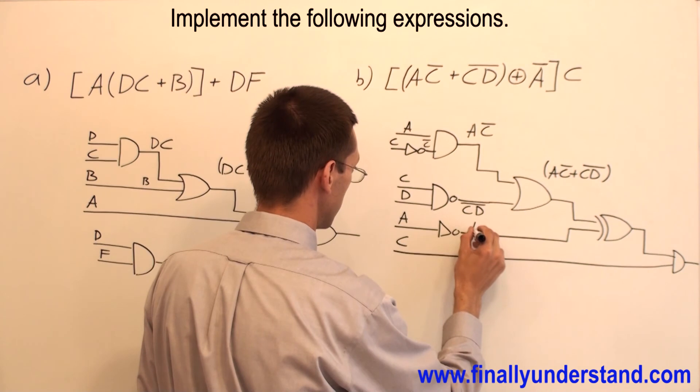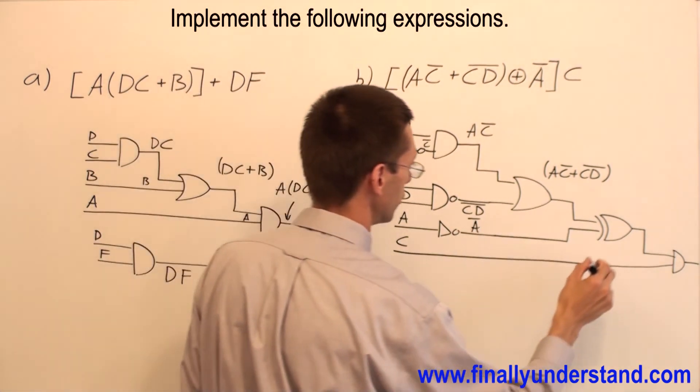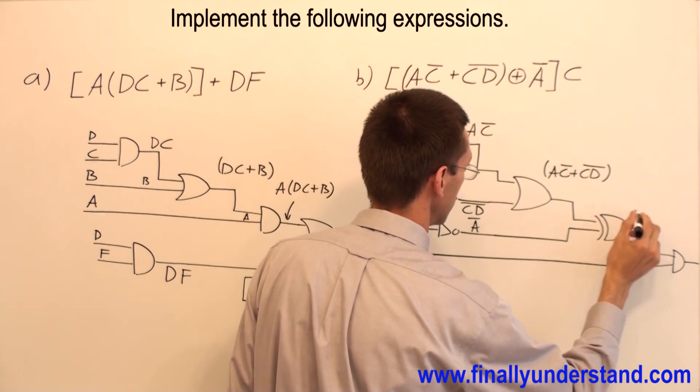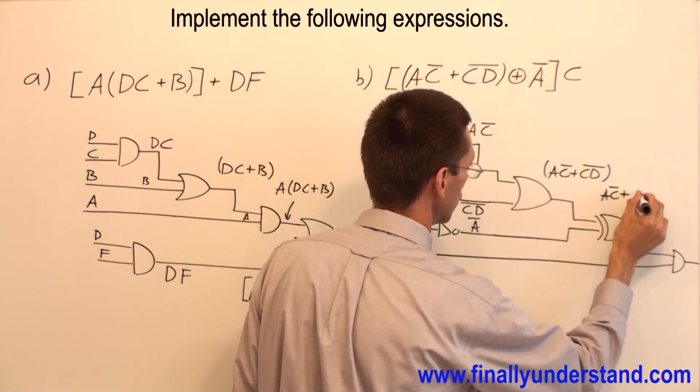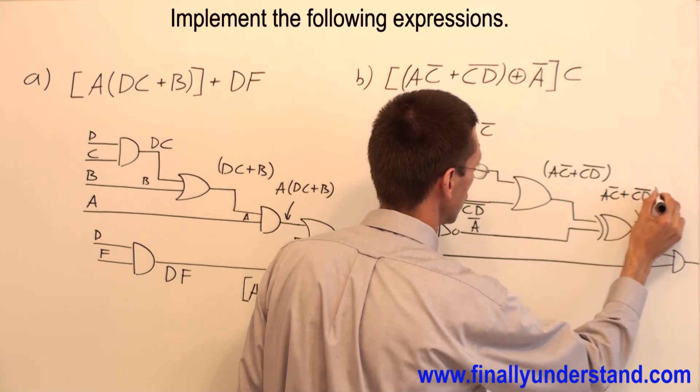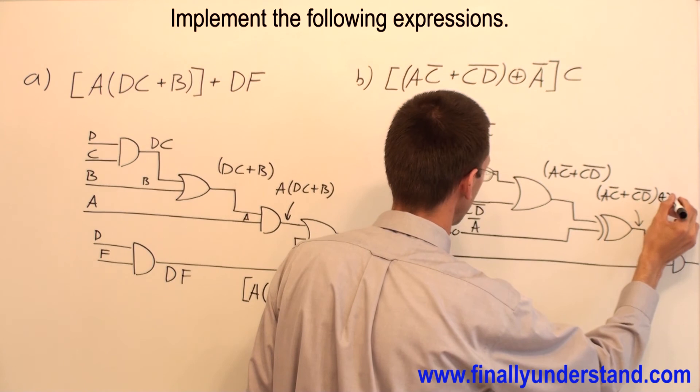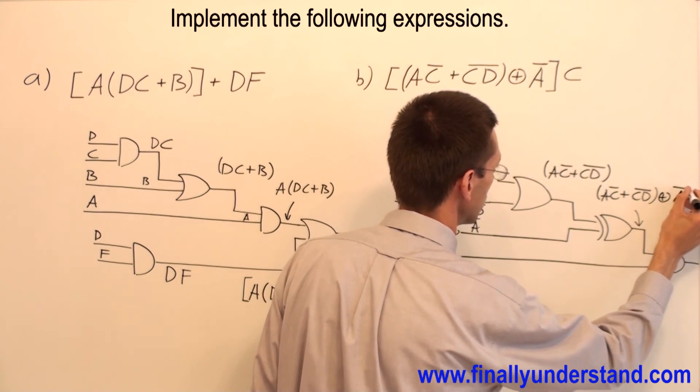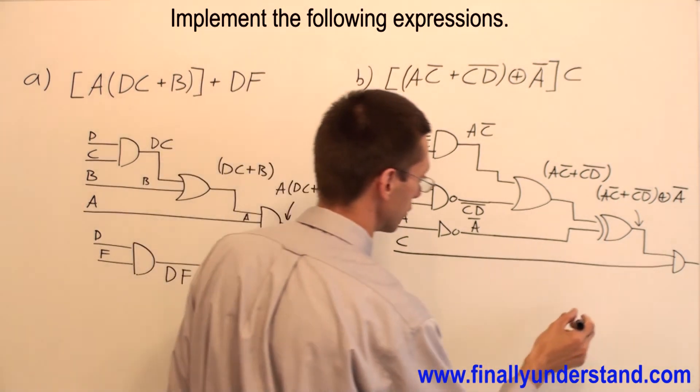I have A NOT over here. Now at the output of this gate, I'm going to have A NAND C OR C NAND D, A NOT Exclusive OR A NOT.